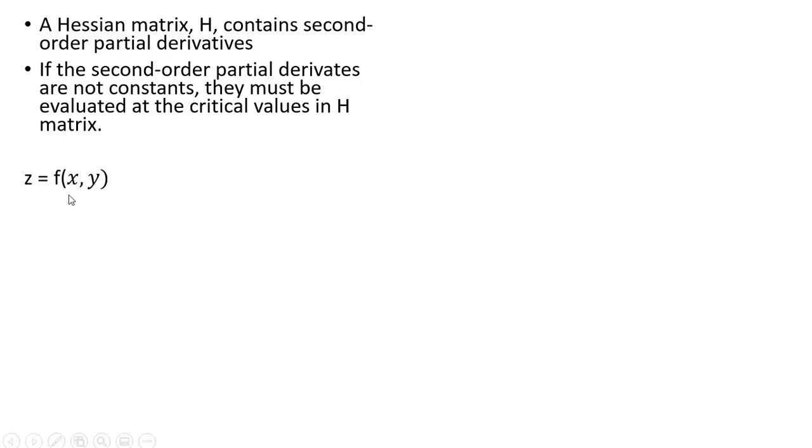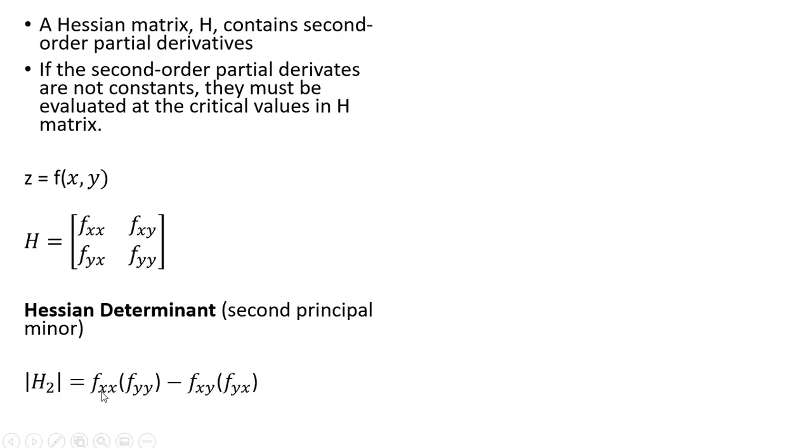We got z as a function of variables x and y, and this is what the Hessian matrix is. Just a series of partial derivatives. And the second principal minor of the Hessian matrix is just the usual way of calculating a determinant from a 2 by 2 matrix. It's a series of cross multiplications here.